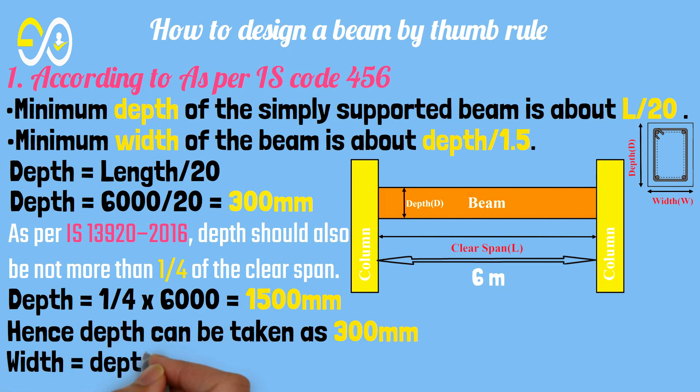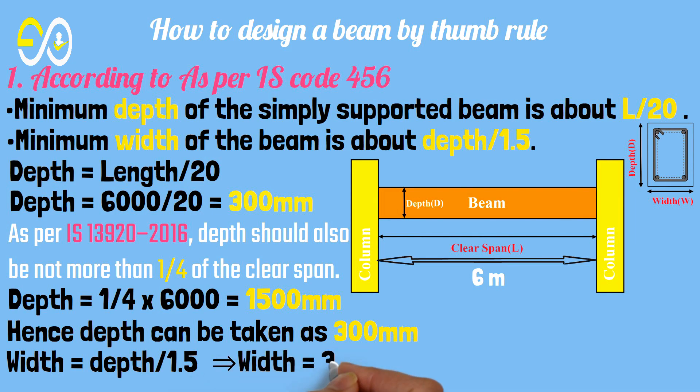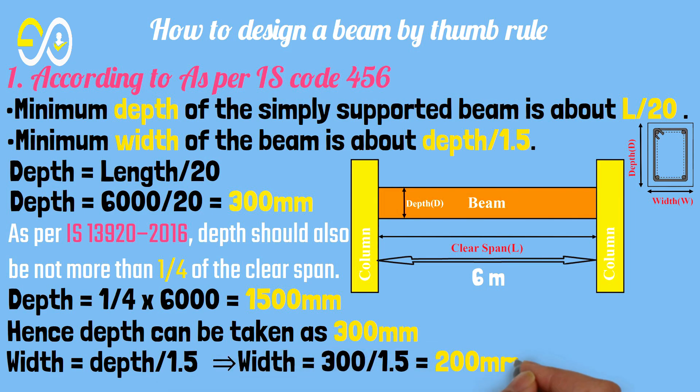Width equals depth over 1.5. Width equals 300 over 1.5, which equals 200 millimeters.